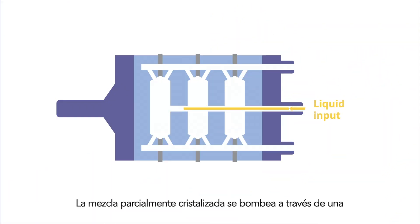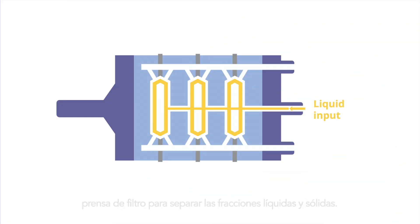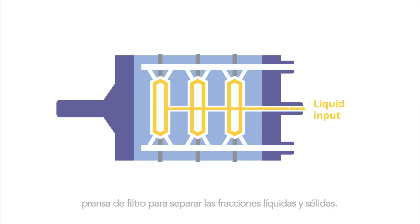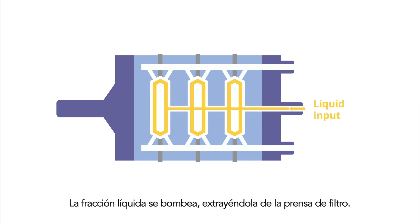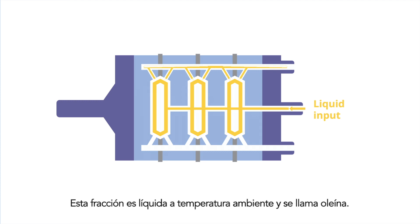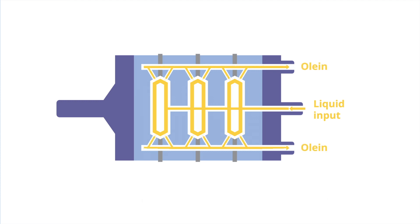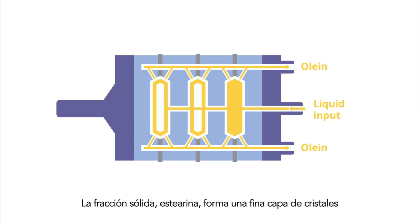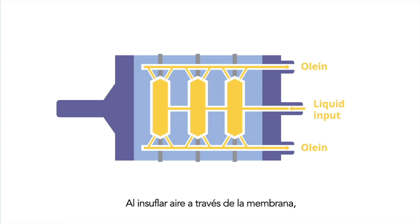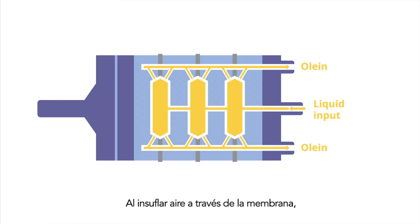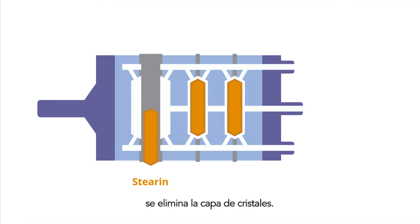The partially crystallized mixture is pumped through a filter press to separate the liquid and solid fractions. The liquid fraction is pumped out of the filter press; this fraction is liquid at room temperature and is called olein. The solid fraction, stearin, has formed a thin layer of crystals on the membrane. By blowing air through the membrane, the layer of crystals is removed.